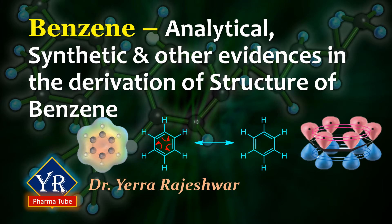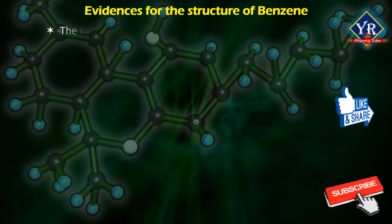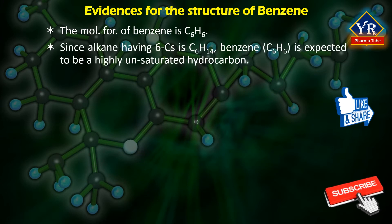we shall discuss the analytical, synthetic and other evidences in the derivation of the structure of benzene. Elemental analysis and molecular weight determination suggests that the molecular formula of benzene is C6H6. Since the alkane having 6 carbon atoms is C6H14, benzene having molecular formula C6H6 has 8 fewer hydrogen atoms than n-hexane, so benzene is expected to be a highly unsaturated hydrocarbon.